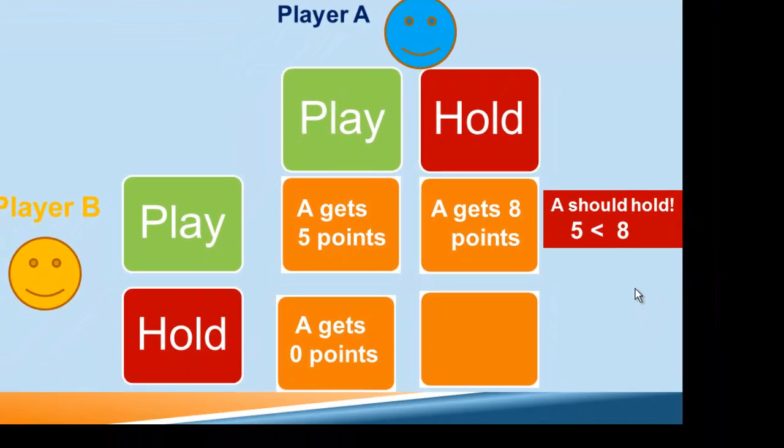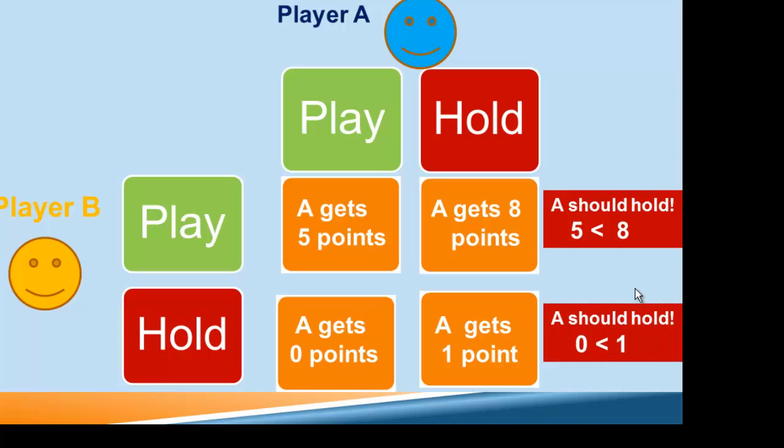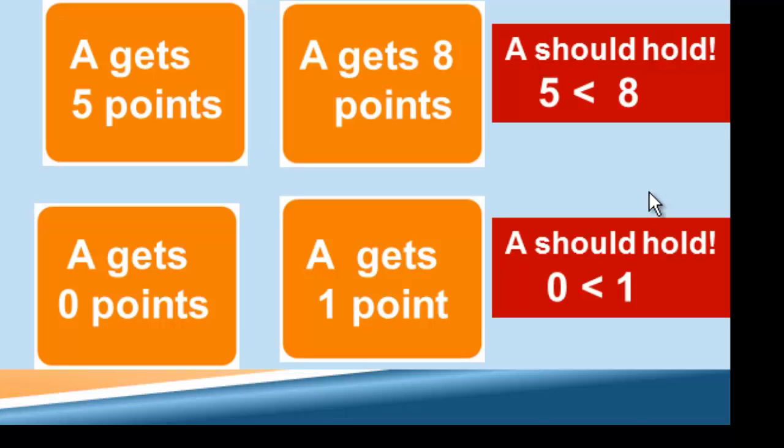The other option open to B is to hold. If player A plays and B holds, then A will get zero points. But if A holds the card, A will get one point. And again, when player A is thinking about this, the obvious conclusion is to hold the card, because one is greater than zero.